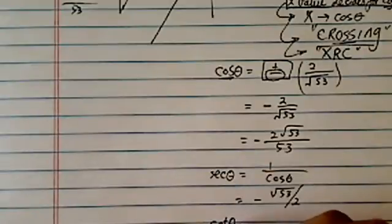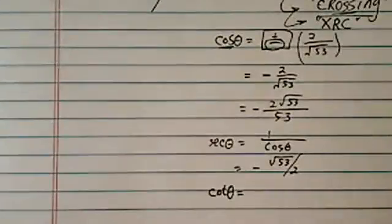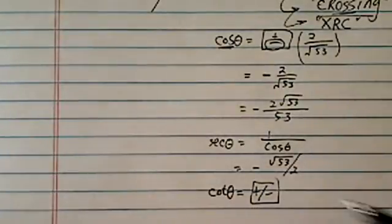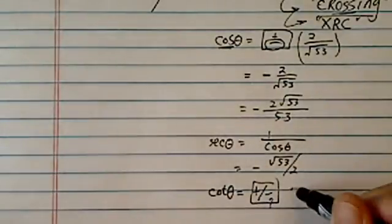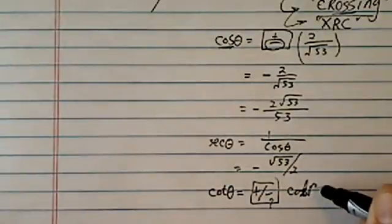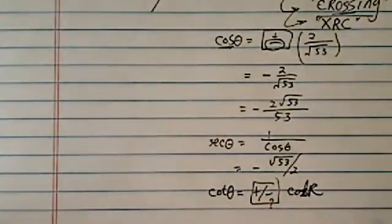And then cotangent theta is plus or minus, we don't know yet. Let's put a box over here, put a question mark, and then cotangent of r.